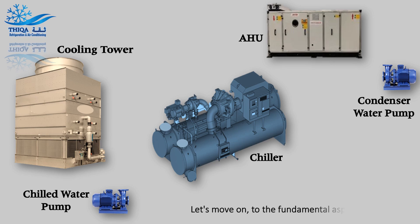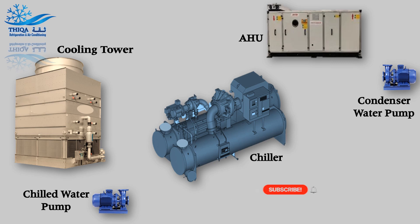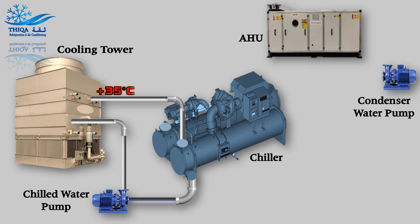Now let's look at the fundamental operating principles. The connection between the condenser and the cooling tower is as follows: the cooling tower receives water at a temperature of 35 degrees Celsius. After passing through the cooling tower, the temperature of the water is reduced to 30 degrees Celsius, and this cycle repeats.